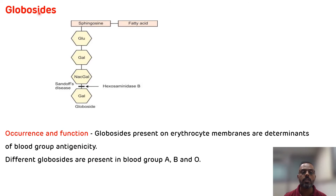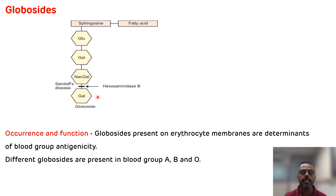The disorder associated with globosides is Sandhoff's disease, which occurs due to the deficiency of hexosaminidase B enzyme. If there is a deficiency of hexosaminidase B, it leads to this inborn error of metabolism associated with globosides, known as Sandhoff's disease.